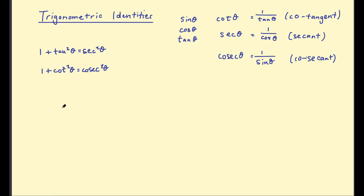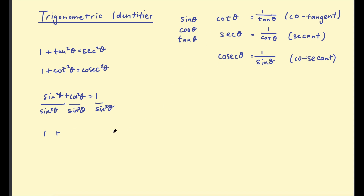Both of these are consequences of the fact that sin²θ + cos²θ = 1. If you take this equation and divide everything by sin²θ, this first term becomes 1, cosine squared over sine squared is cot squared, and 1 over sine squared is cosec squared — giving 1 + cot²θ = cosec²θ. You can do the same thing dividing by cos²θ to get the first identity.